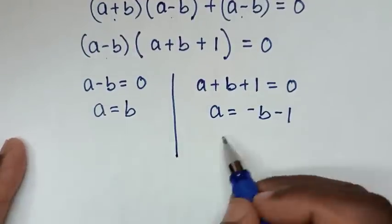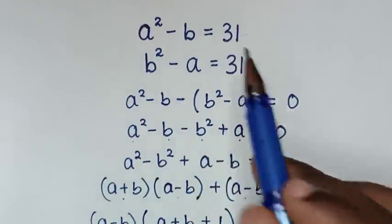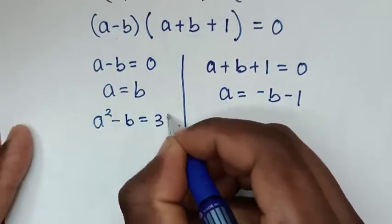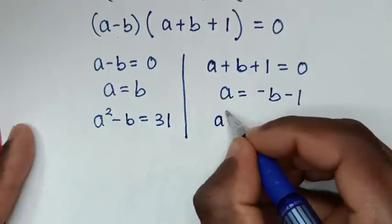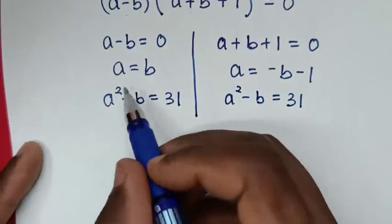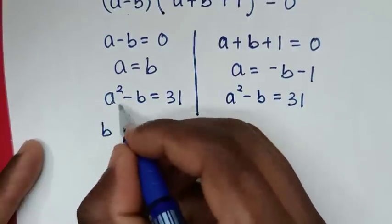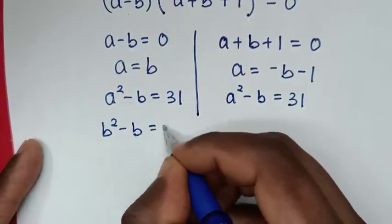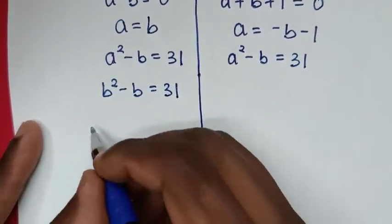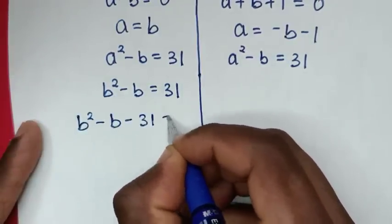Now we substitute each solution back into the first equation, a squared minus b equals 31. Using the first solution where a equals b: substituting gives b squared minus b equals 31, and rearranging gives b squared minus b minus 31 equals 0.